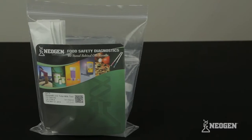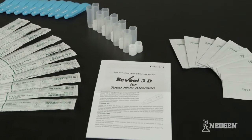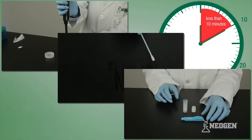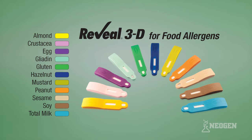Each kit contains everything required to perform testing. Sample preparation and testing takes less than 10 minutes, making Neogen's Reveal 3D tests a great choice for on-site food allergen control.